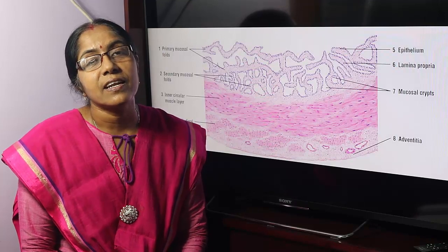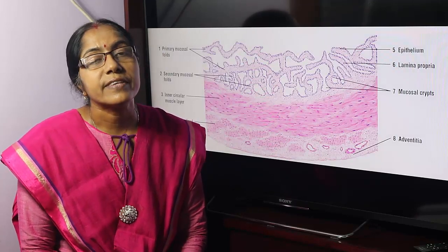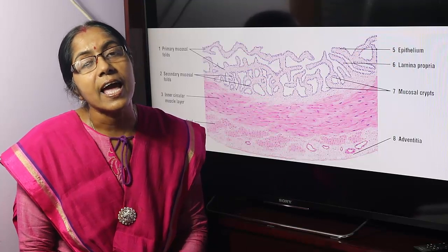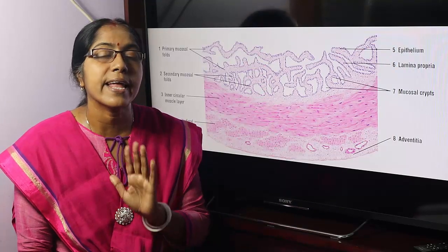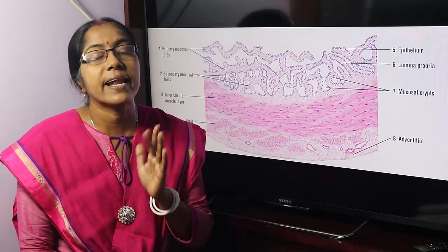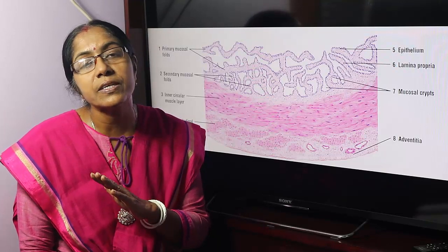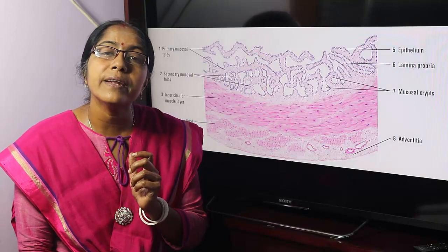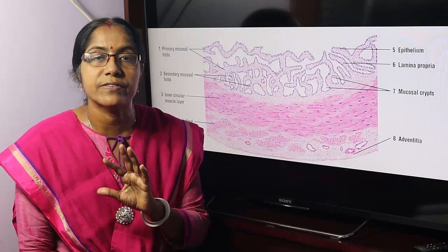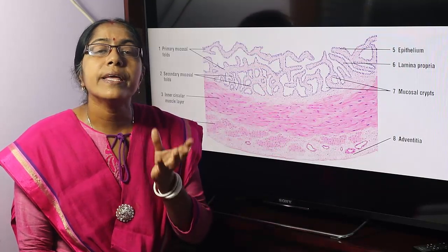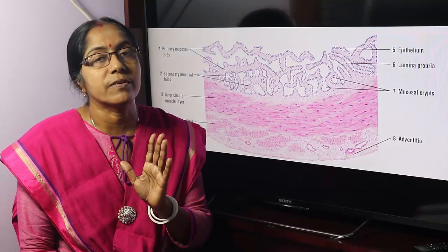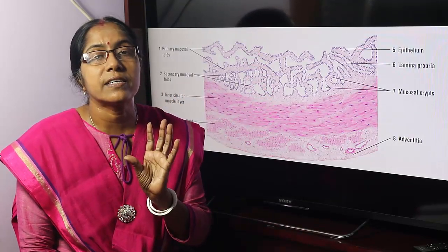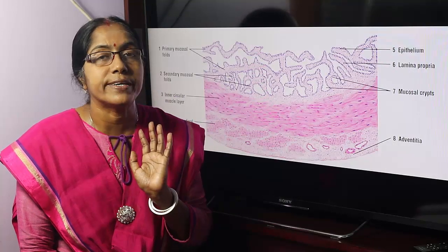What is the seminal vesicle? It is an accessory sexual gland of the male. They are paired glands situated at the base of the bladder. They are exocrine glands and are highly convoluted on themselves — tubular structures that are highly convoluted.